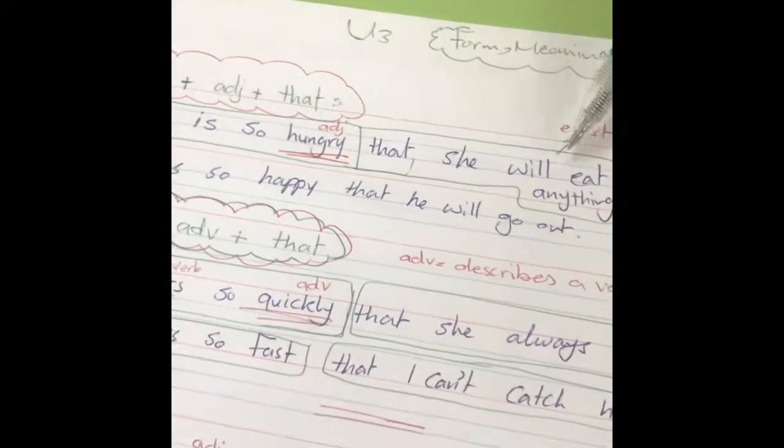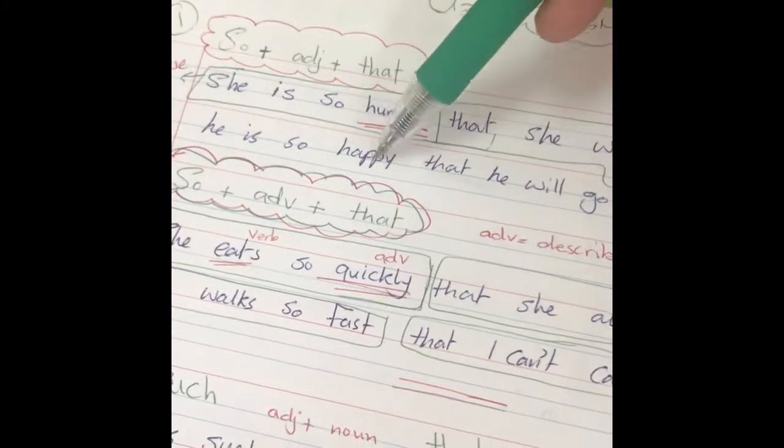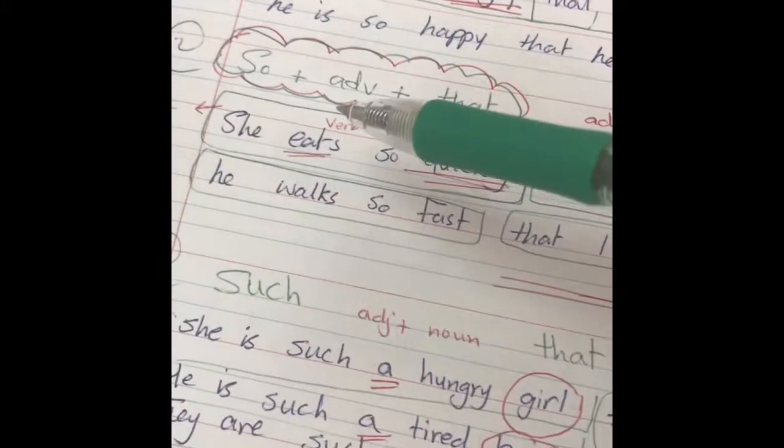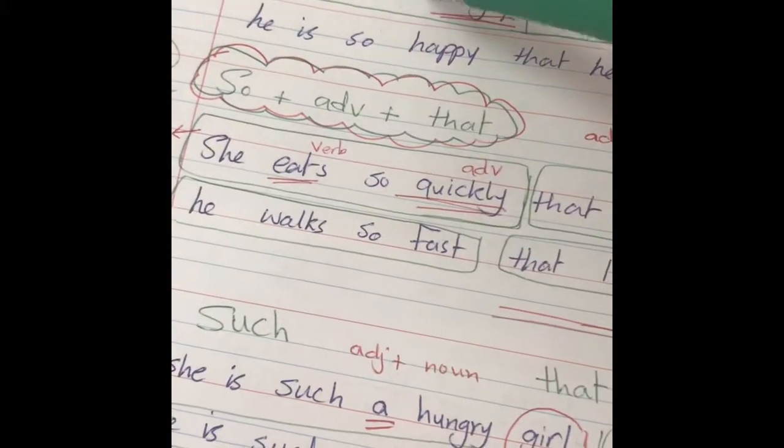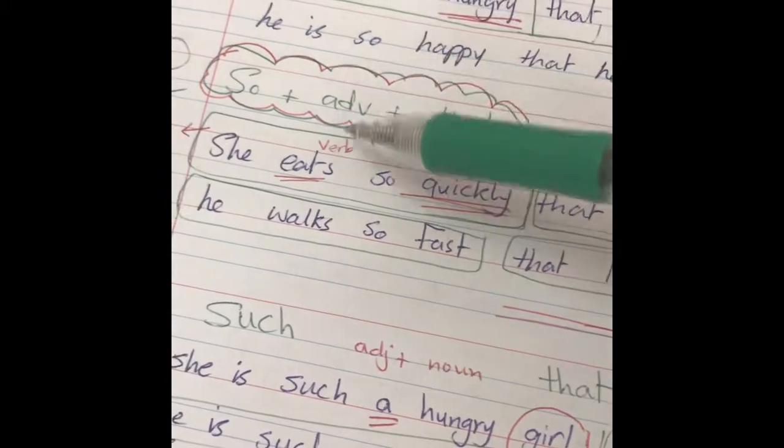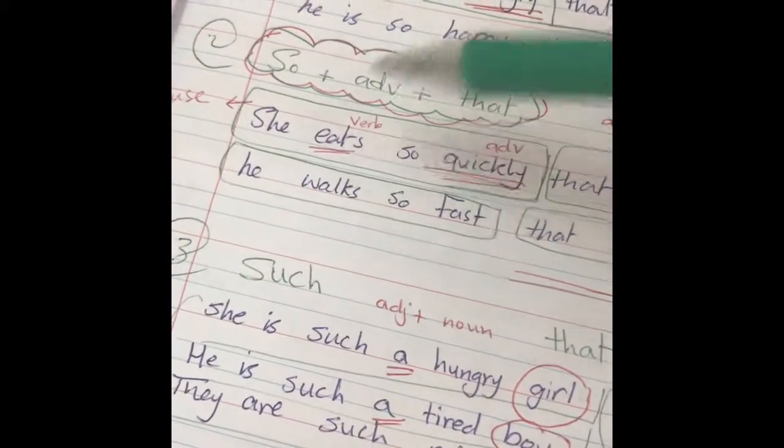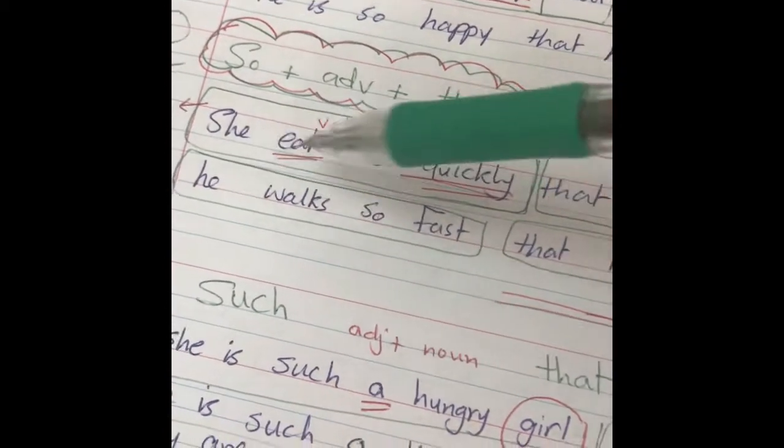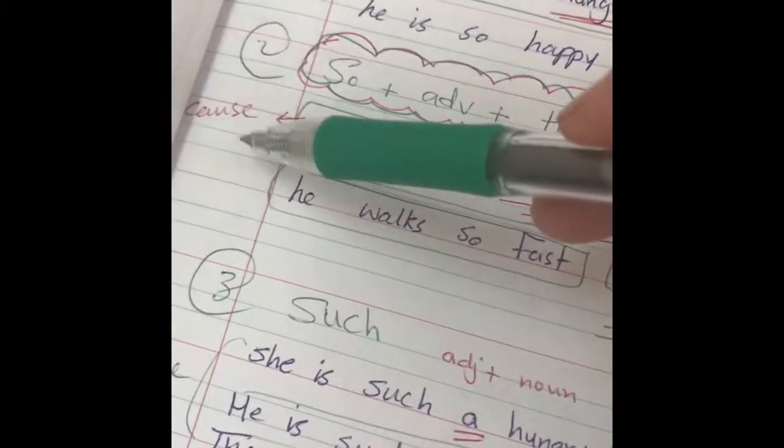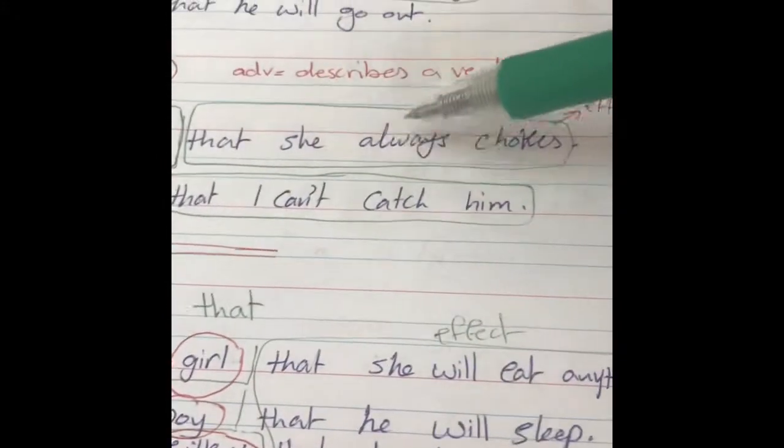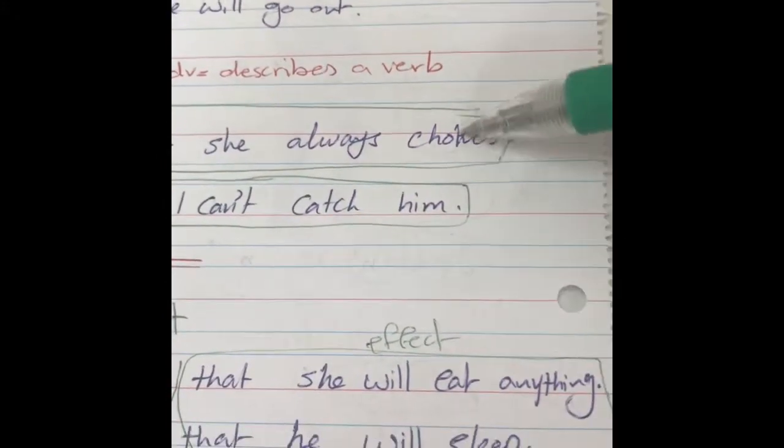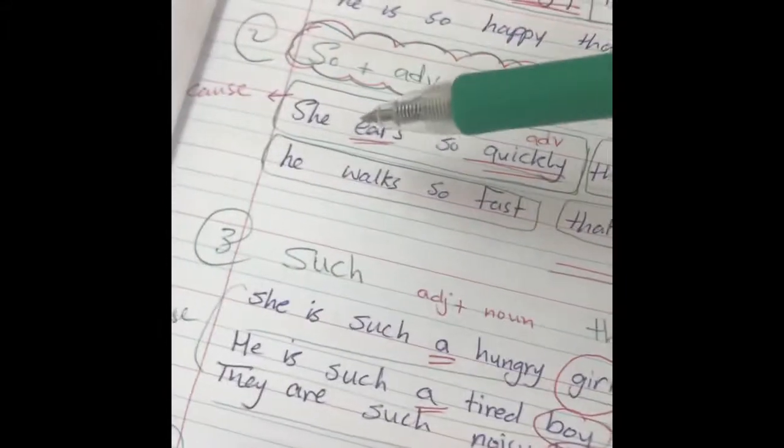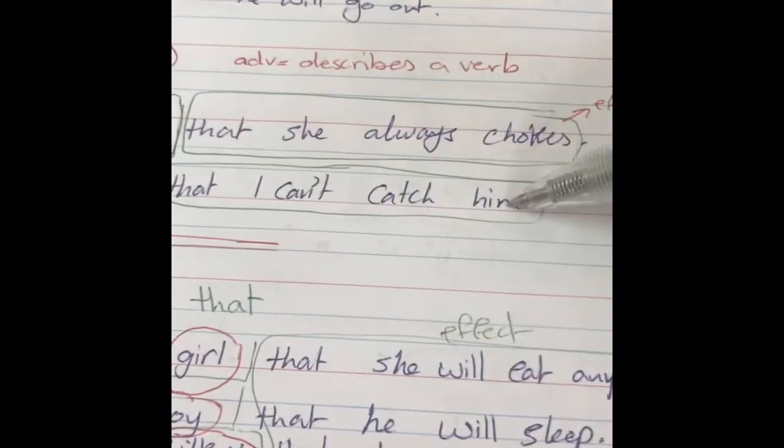The second, if I have an adverb. Here we had adjective, it describes a noun. The adverb describes a verb. She eats so quickly. Quickly describes the verb eating, so it's so quickly. She eats so quickly, this is the cause. What's the effect? That she always chokes. Or he walks so fast that I can't catch him.